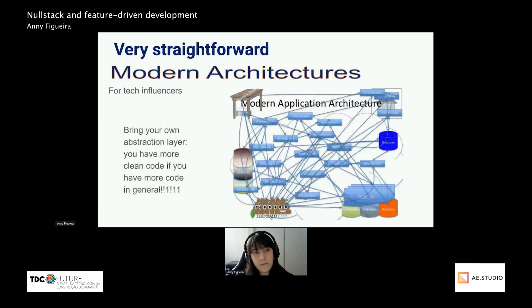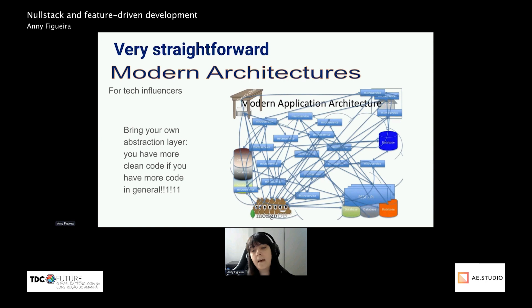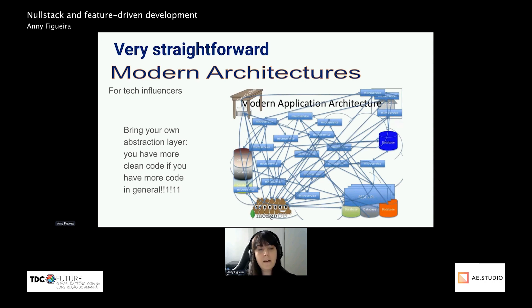As you can see, this is an accurate representation of some project architectures. Even if you didn't have to deal with something this bad, chances are you're already working on a project where the data journey looks something like this: you take data from the database, it goes to a model, then to a service, then to a controller to be serialized, then fetched by the client, deserialized, dispatched through some reducer, and then passed as a prop to a component to finally be rendered. You don't even need to stop there — you can add many more abstraction layers. But in the end, all we wanted was to dump some database information on the screen. It was supposed to be easy, right?